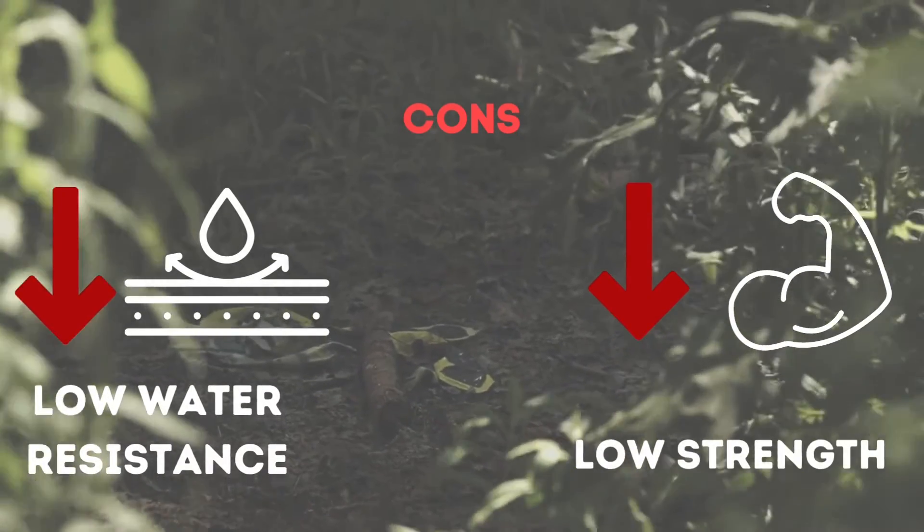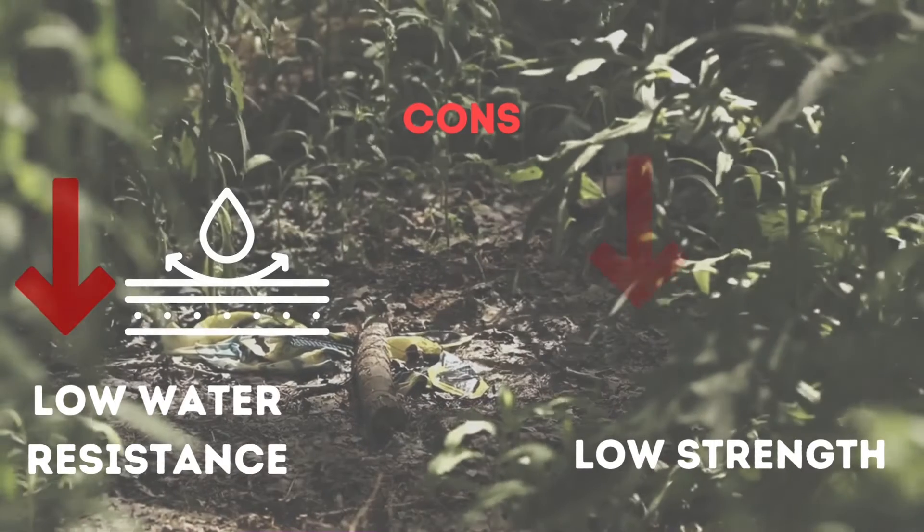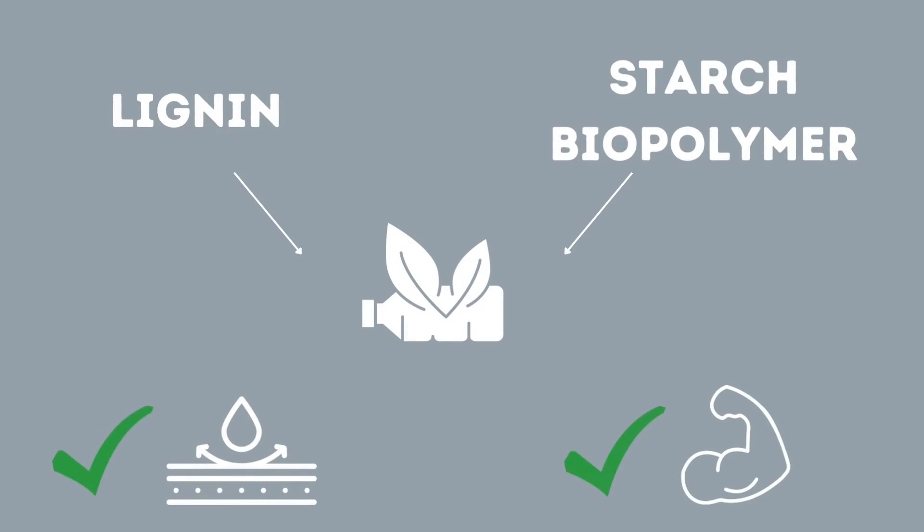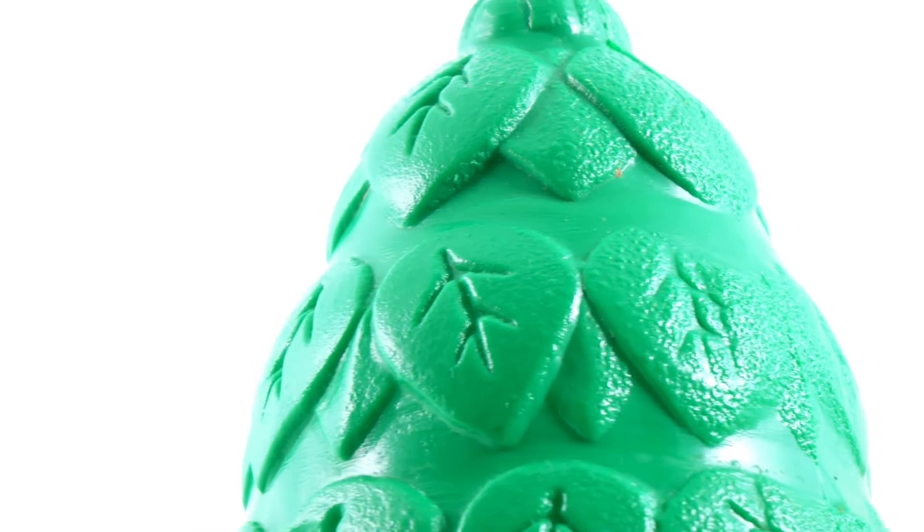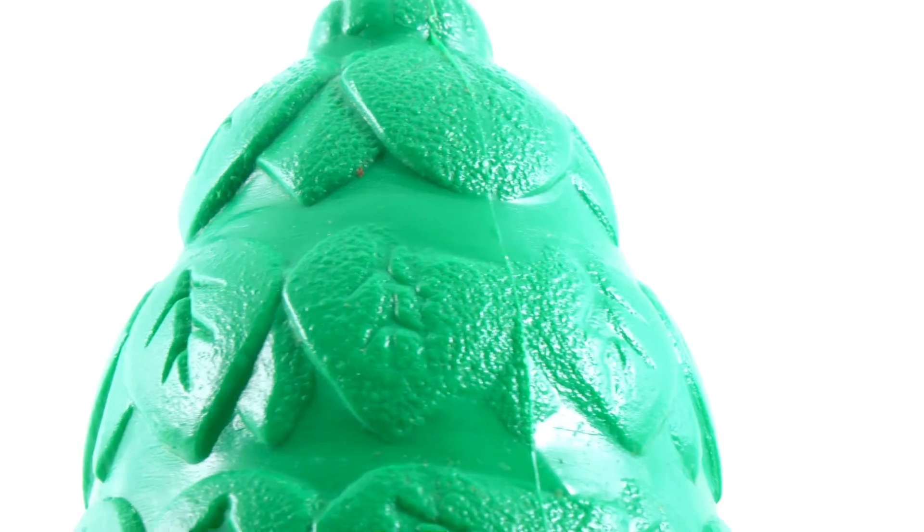However, some weaknesses of a starch polymer are the low water resistance and strength. By combining lignin with a starch biopolymer, the bioplastic becomes water resistant and strong due to the hydrophobic and durable nature of lignin. This, along with the previously mentioned benefits, makes an ideal bioplastic that can be used for a variety of things.